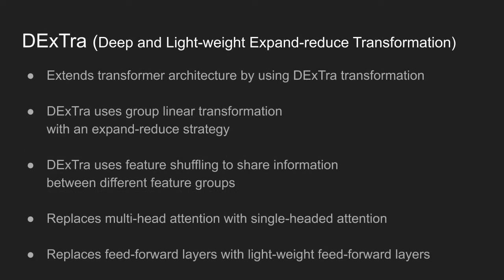The method extends transformer architecture by using DExTra transformation. DExTra uses group linear transformations with an expand-reduce strategy to vary the width and depth of the DeLighT block efficiently. To share information between different feature groups, DExTra uses feature shuffling because group linear transformations are local by nature. This wide and deep representation allows replacement of multi-head attention and feed-forward layers in transformers with single-headed attention and lightweight feed-forward layers.